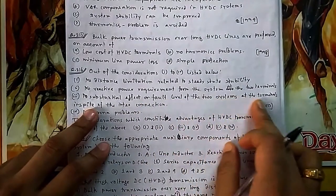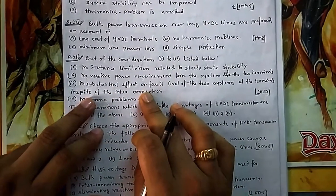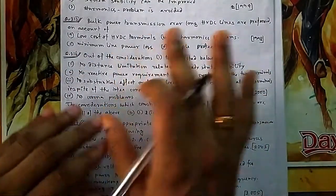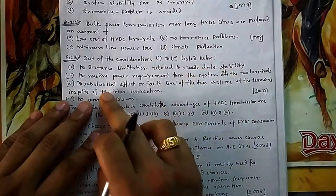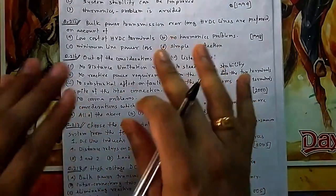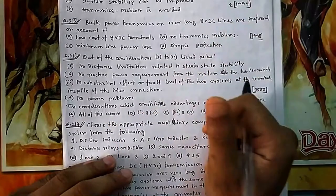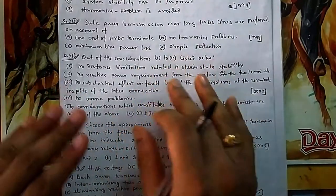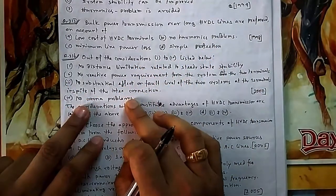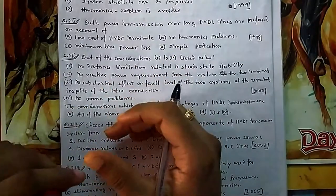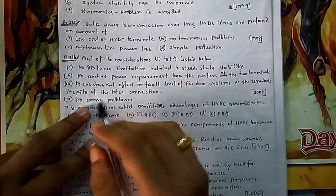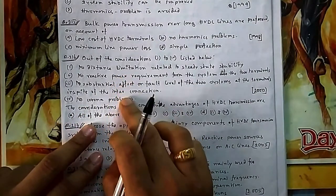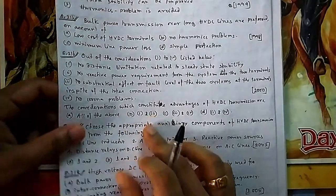Consideration 3: no substantial effect on fault level at the two terminals despite the interconnection. When you interconnect two systems via HVDC, the fault level doesn't change substantially, so consideration 3 is correct. Consideration 4: no corona loss — this is incorrect because corona losses do exist in DC lines. So considerations 2 and 4 are wrong, and the answer is 1 and 3, option B.